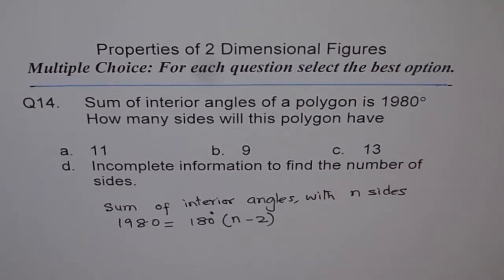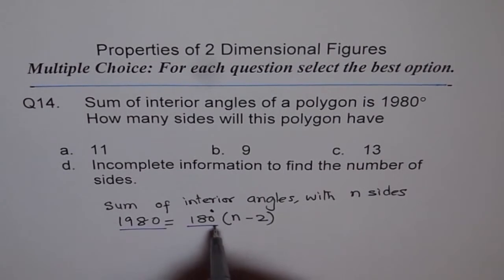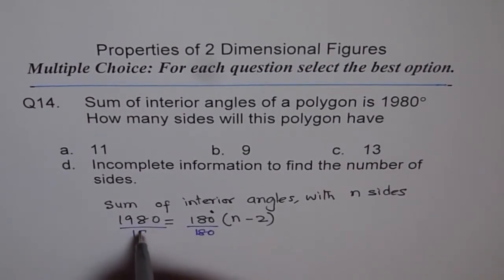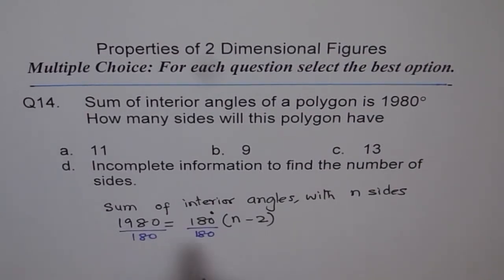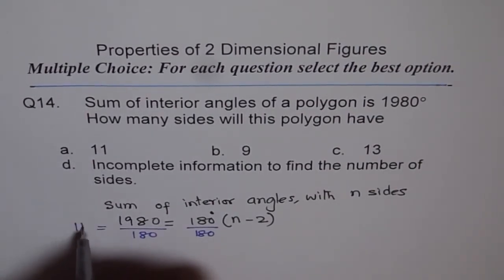To solve this, we can divide both sides by 180. When we do that, we get 1980 divided by 180, which gives us 11.